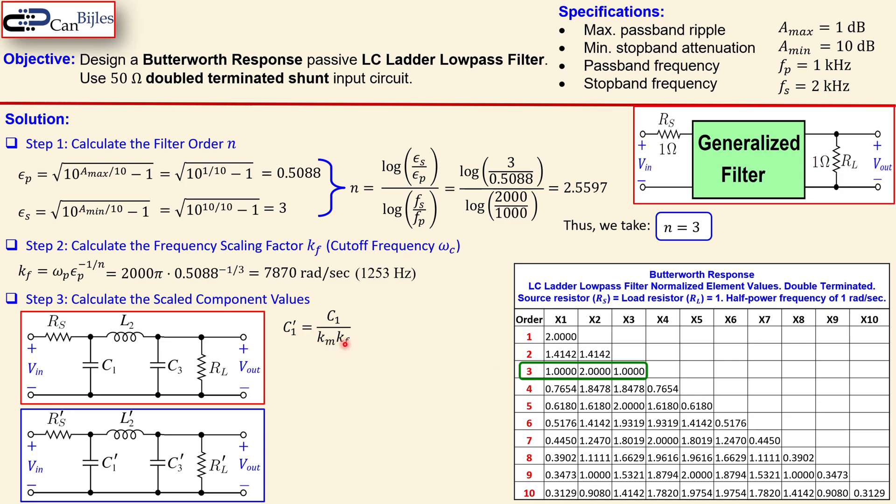We will see that now here, how we will do that, going directly to the scaled component values, because the C1 prime is C1, which is this, over K_m over K_f. What is C1? It's just one, you just take it from the table. 50 for K_m, that is the magnitude scaling factor. We have the frequency scaling factor, but we also have the magnitude scaling factor which is 50, why? Because it must be 50 ohms double terminated, so that is fixed, and we also have this 7870 radians per second from the K_f.